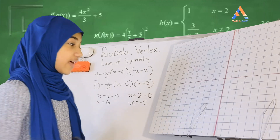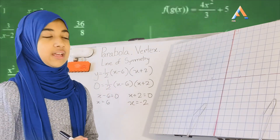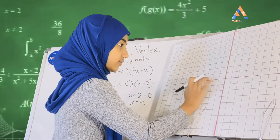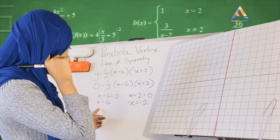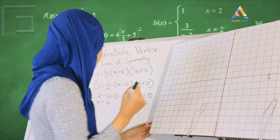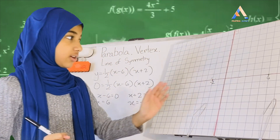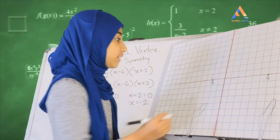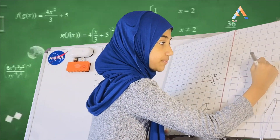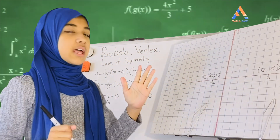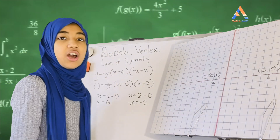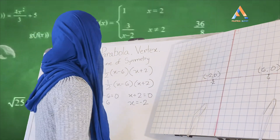So our two x-intercepts are x equals 6 and x equals negative 2. Plotting these on the graph, the coordinates are (negative 2, 0) and (6, 0). Now we're going to figure out the midpoint — the line that goes in between these two points — and that is our line of symmetry.